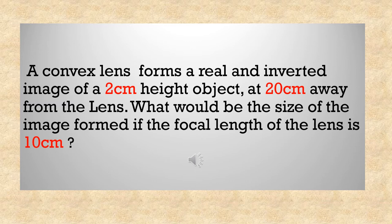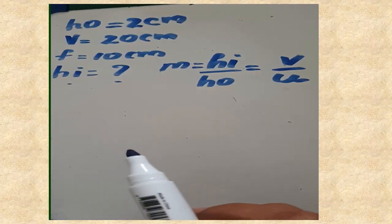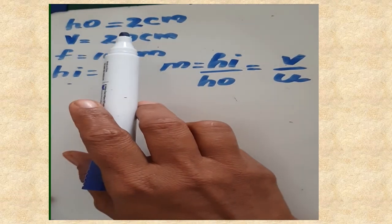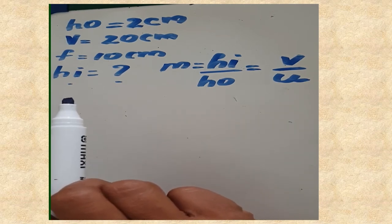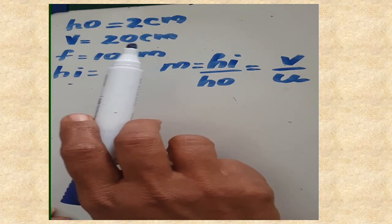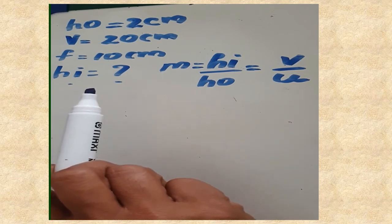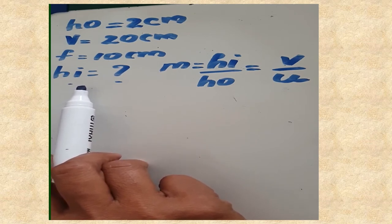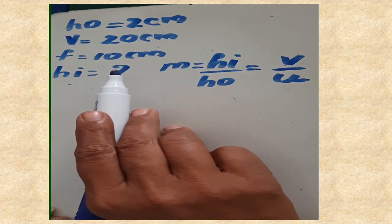Next question: A convex lens forms a real and inverted image of a 2 cm height object at 20 cm away from the lens. What would be the size of the image formed if the focal length of the lens is 10 cm? So HO = 2 cm, V = 20 cm, F = 10 cm, and we need to find HI.